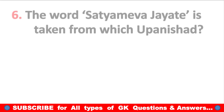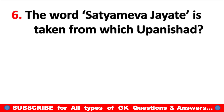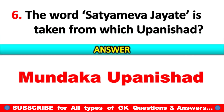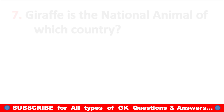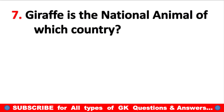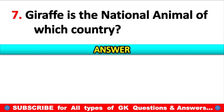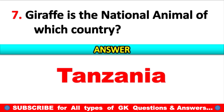The word Satyameva Jayate is taken from which Upanishad? Answer: Mundaka Upanishad. Giraffe is the national animal of which country? Answer: Tanzania.